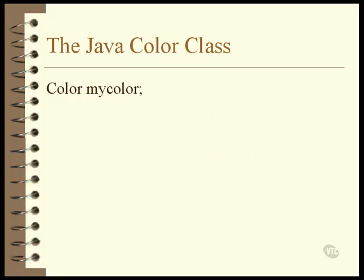Just like any other object, to create a color object you first need to declare a reference to hold its address, which you can do on the same statement you use to create the color, or you can do it ahead of time, like the line of code shown here.